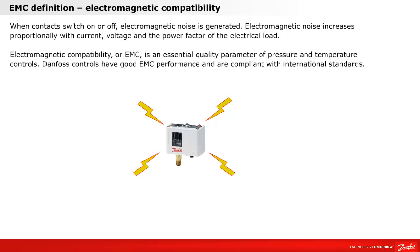When contacts switch on or off, electromagnetic noise is generated. Electromagnetic noise increases proportionally with current, voltage, and the power factor of the electrical load. The power factor is very important in relation to inductive loads, as a larger arc is produced. The noise emission spreads by the supply leads and electromagnetically by the air. This noise can disturb sensitive electronic equipment such as mobile phones, radios, and televisions.